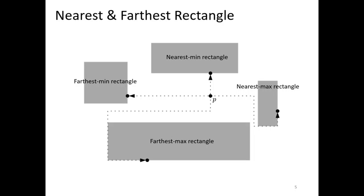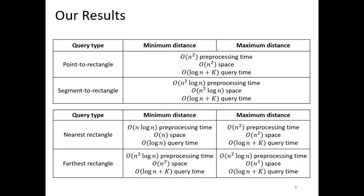For instance, the bottom rectangle is the farthest from P with Minimum Distance. That is our result of the paper. We propose the data structure and algorithm to support point-to-rectangle query, which given a point or rectangle, reports the shortest path in O(log N + K) time, with minimum and maximum distance query time in O(N²) preprocessing time and space, where K is the complexity of the reported path.